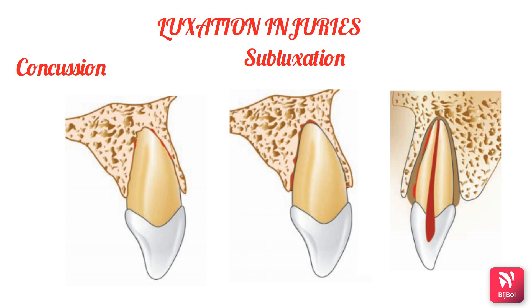Treatment for concussion and subluxation involves ruling out root fracture by radiograph, relieving occlusion by selective grinding of opposing teeth, and immobilizing the injured tooth. Endodontic therapy should not be carried out initially because negative testing results and crown discoloration may be reversible. The prognosis shows only minimal risk of pulp necrosis and root resorption.